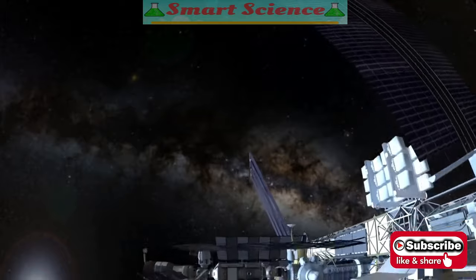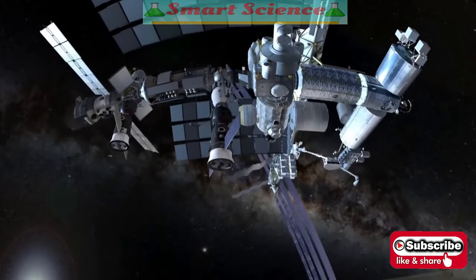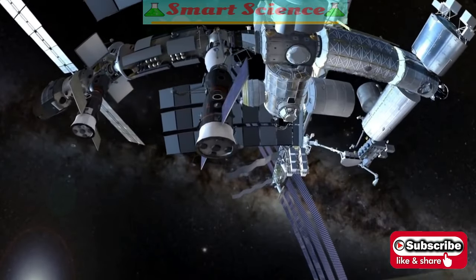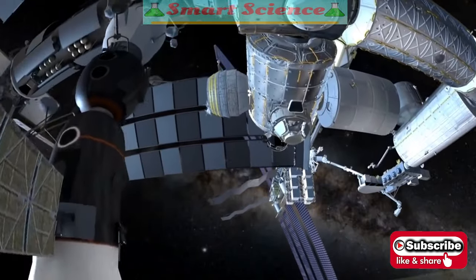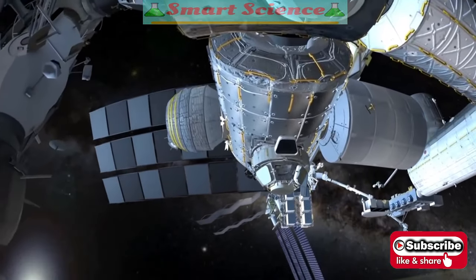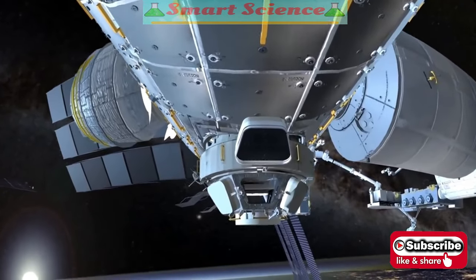The low orbit of the International Space Station keeps it within Earth's protective magnetic field. In early 2016, astronauts gathered in the cupola, their favorite place to watch the Earth below.